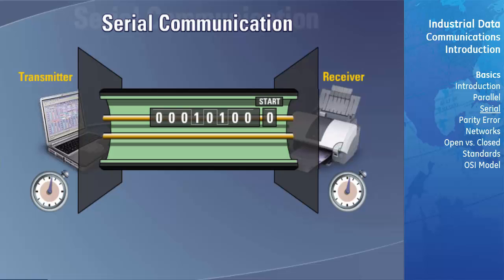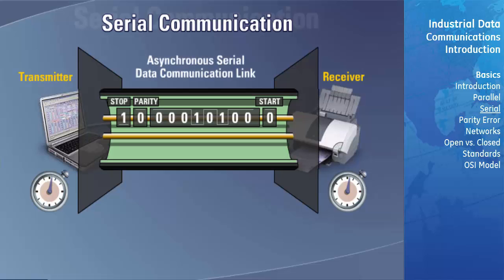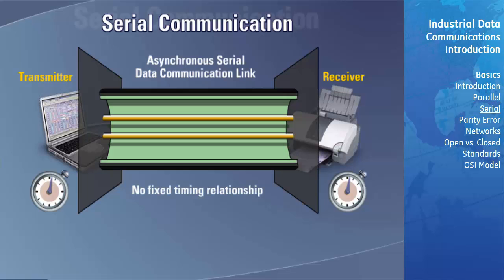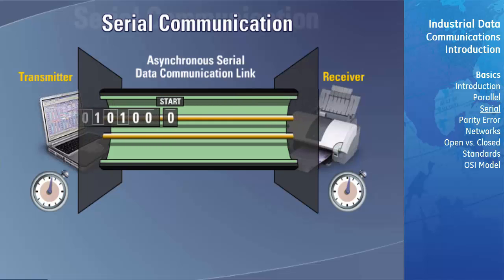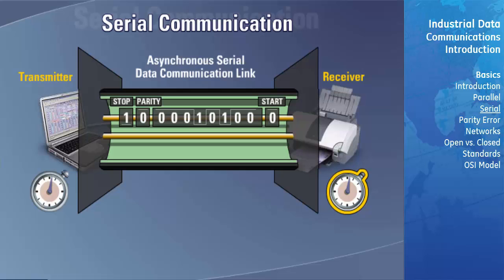Some additional information is also added so that the message can be effectively transmitted and understood at the receiving end. Let's take a look at the most common form of serial link: the asynchronous serial data communication link. An asynchronous system is one where there is no fixed timing relationship for the transfer of data packets. However, once a start bit has started the transmission, the bits of each character are transmitted precisely at a specific bit rate. The receiver's clock starts timing from the leading edge of the start bit, then reads each of the following bits at the center of each bit time, recording each bit as either a logic 1 or logic 0.